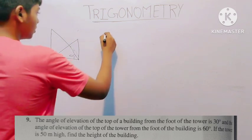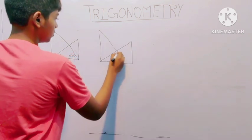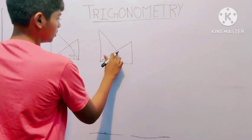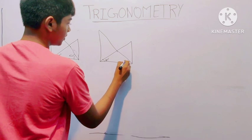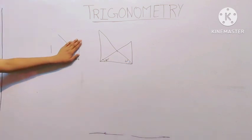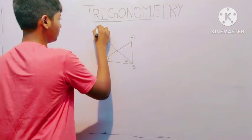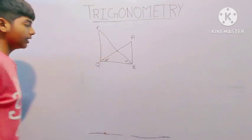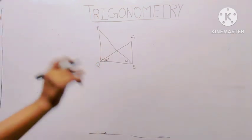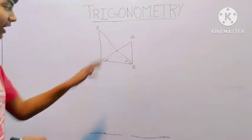Let me make this diagram a little better. This angle here is 60 degrees. Now we are set to find the height of the building. Let AB be the building and PQ be the tower. We need to find the height of the building — the main thing in this question is just to understand the problem and make the diagram.